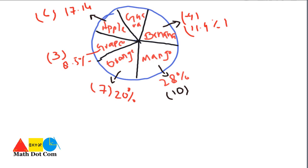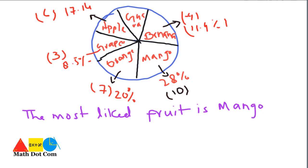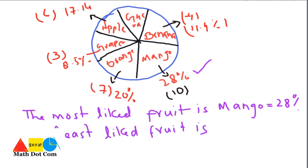By looking at this graph you can easily evaluate useful information. For example, the most liked fruit is mango because its percentage is 28%, which is the highest of all. The least liked fruit is grapes, with only 8.5% and only 3 people choosing it. This means you can easily use a pie graph to convert your given data into meaningful data in order to evaluate useful information from it.